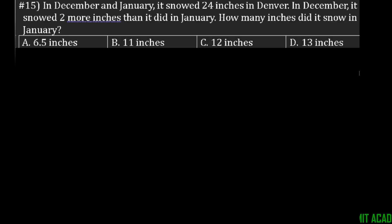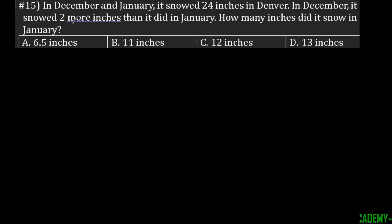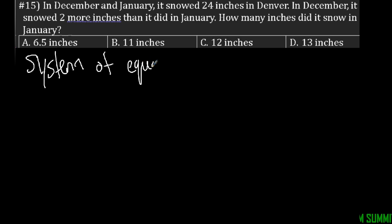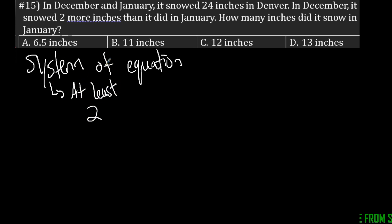Picking up where we left off on the part two video, it says in December and January it snowed 24 inches in Denver. And in December it snowed two more inches than it did in January. How many inches did it snow in January? So what you can do is come up with a system of equations. The reason why we have a system is because we're going to have at least two equations on the same graph.